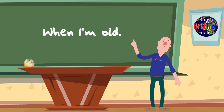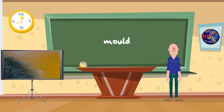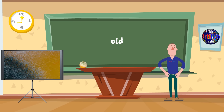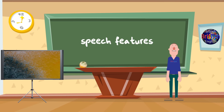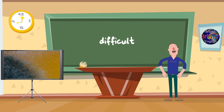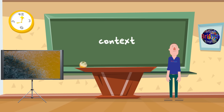When I'm old. This makes it seem as if the word "Mould" is being spoken rather than the word "OLD." This is one of the speech features of English that can make fast spoken English difficult to understand. Often the context helps us understand the words we ought to be hearing.